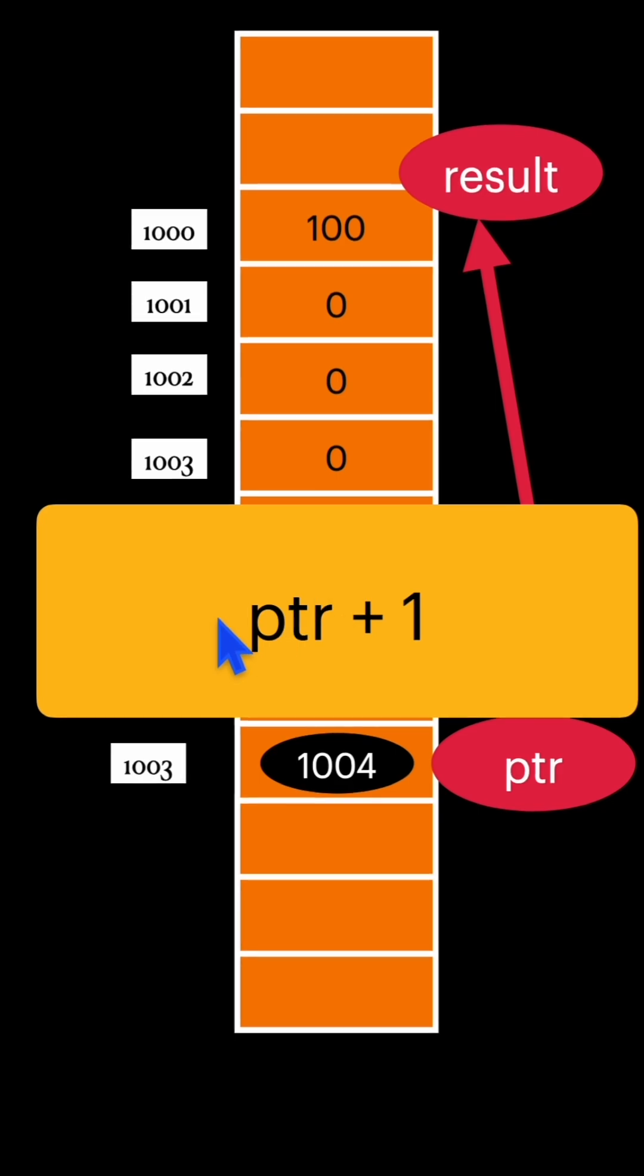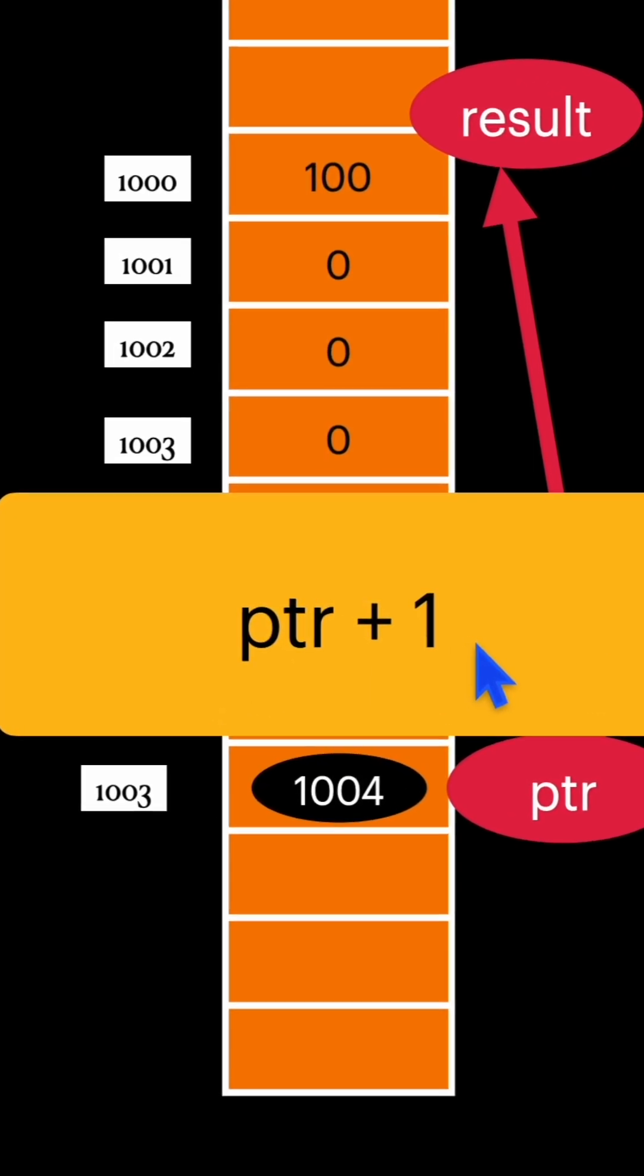So in programming, how can you write it? If you simply minus it, ptr plus 1 minus ptr, it will give you the value of 1.